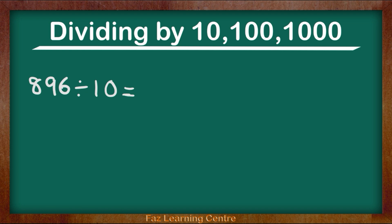Let's look at this question: 896 divided by 10. What does that mean? It means making the number 896 ten times smaller. We are going to bring in our decimal just like I have shown you from the first example. We are going to move to the left one time.